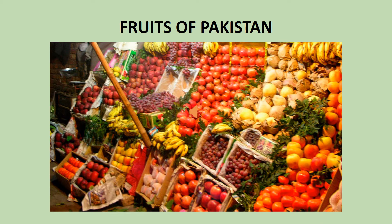The climatic diversity of Pakistan allows nearly all types of fruits to be grown here. We have temperate fruits — apple, apricot, cherry, peach, pear, plum, grape, strawberry, and currants. Then we have tropical fruits — banana, mango, guava, papaya, and tamarind — which cannot survive in frost-like conditions. We also have subtropical fruits — date, fig, orange, and pomegranate.